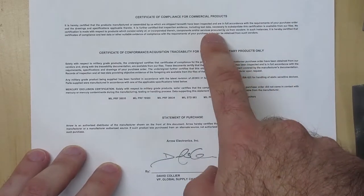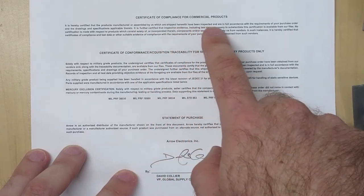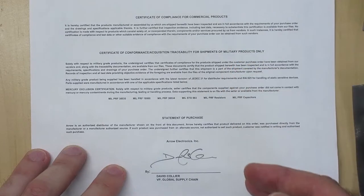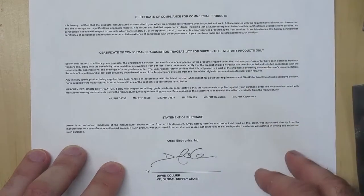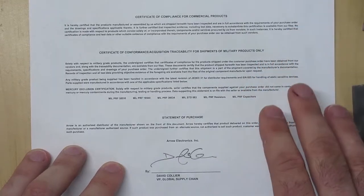So there's three paragraphs here. The first one basically says that all the products assembled by us, which are shipped, they basically meet the specifications that I requested. So if I asked for a 1 kilo ohm resistor with 5% tolerance, I'm getting exactly that.